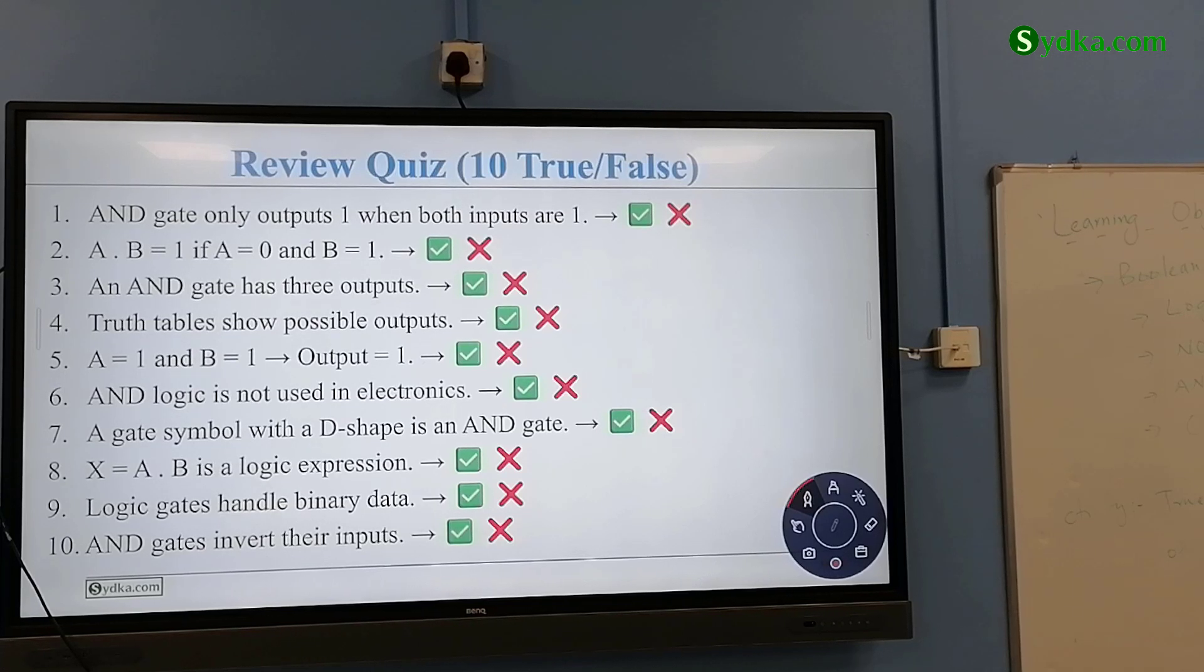These are long questions I've left for you. Next one: AND gate only outputs one when both inputs are one? Yes, okay. A dot B is equal to one if A is equal to zero and B is equal to one? True or false? False, because both have to be one. AND gate has three outputs? One output.